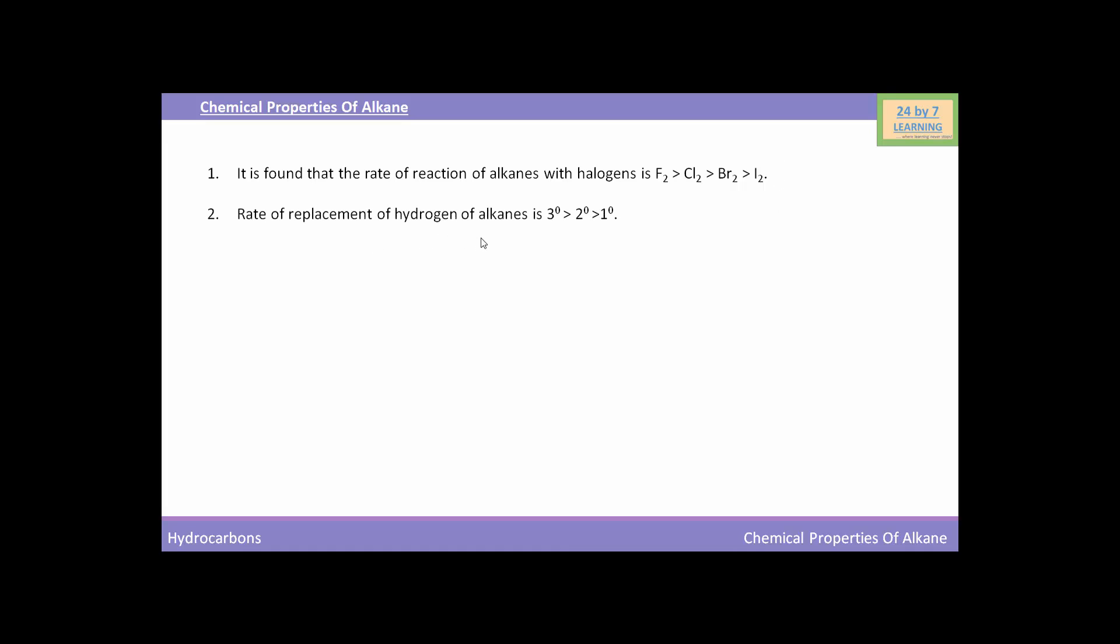Rate of replacement of hydrogen of alkanes is tertiary 3° > secondary 2° > primary 1°. Tertiary alkanes has the highest rate of replacement of hydrogen while primary alkanes has the least rate.